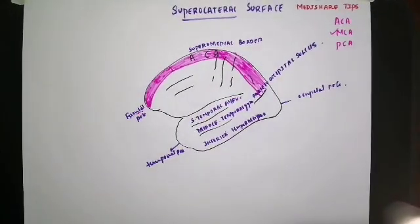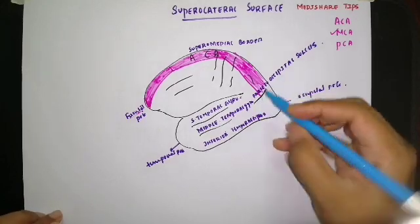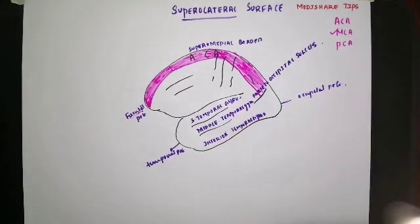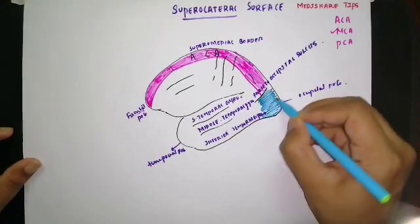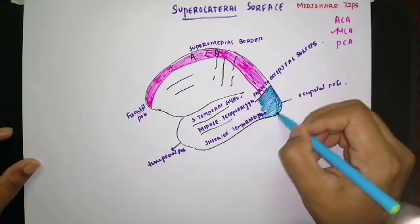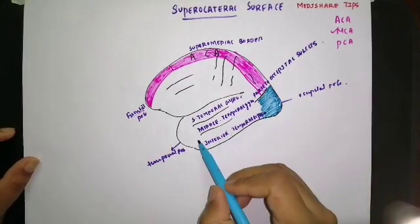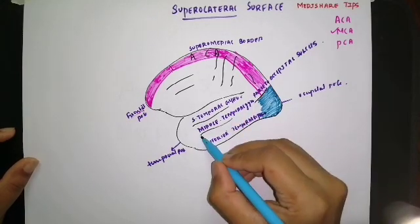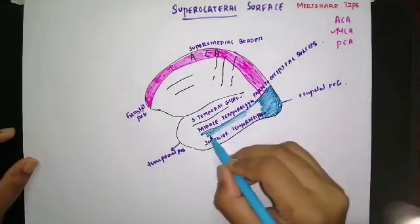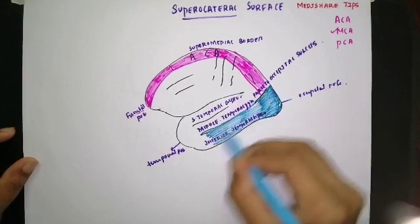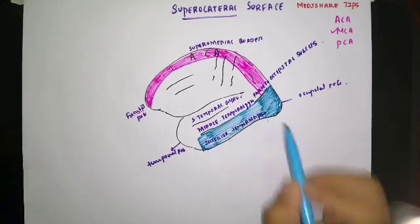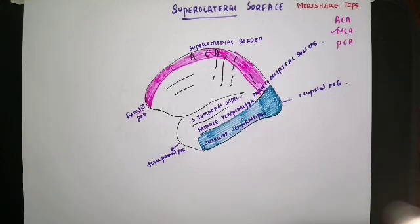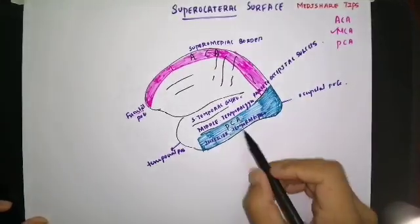The posterior cerebral artery supplies the occipital lobe on the suprolateral surface. The posterior cerebral artery also supplies the inferior temporal gyrus, excluding an area over the temporal pole.